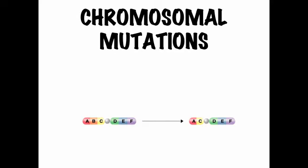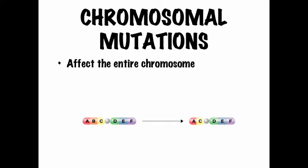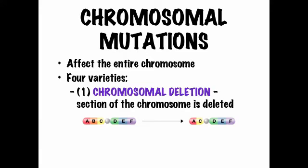There are two major types of mutations: gene mutations, which affect a single gene, and chromosomal mutations, which affect an entire chromosome. Chromosomal mutations lead to some of the most severe genetic diseases we know — things like Down syndrome, for example. There are four varieties of chromosomal mutations.